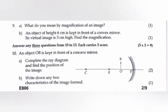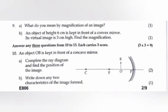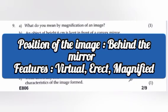Question 10. An object OB is kept in front of a concave mirror. A. Complete the ray diagram and find the position of the image. B. Write down any two characteristics of the image formed. Answer: Position of the image behind the mirror and the features are virtual, erect, magnified.